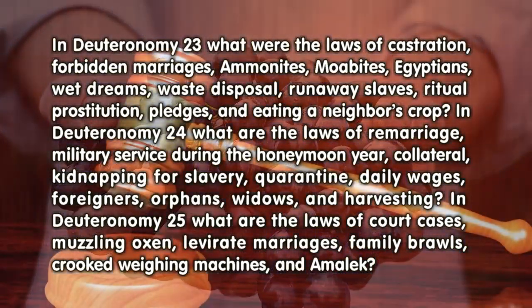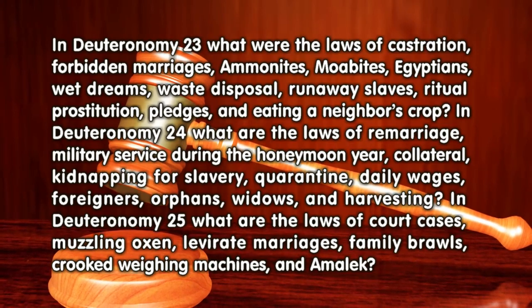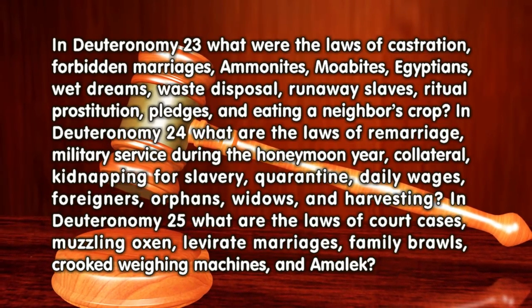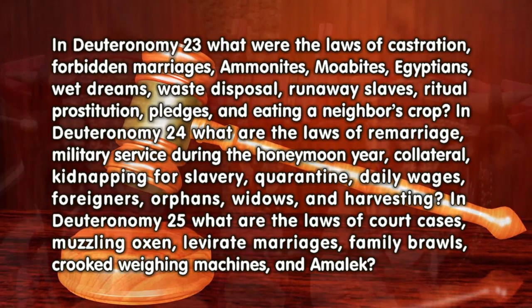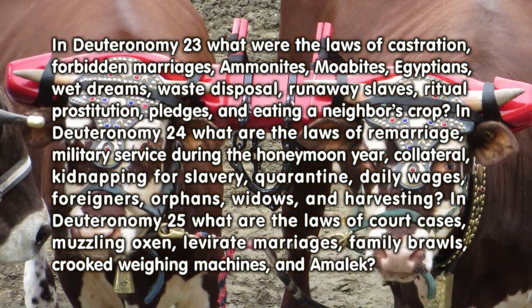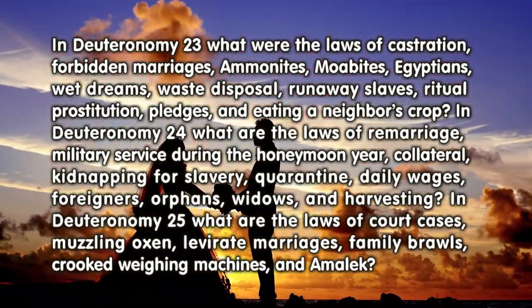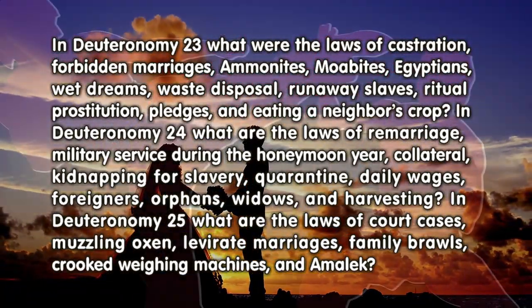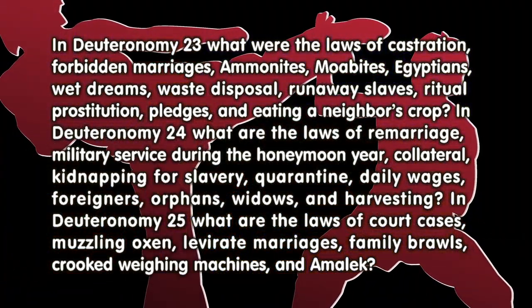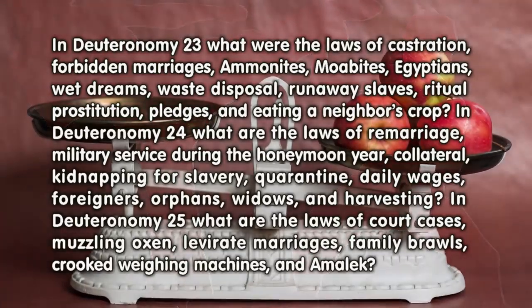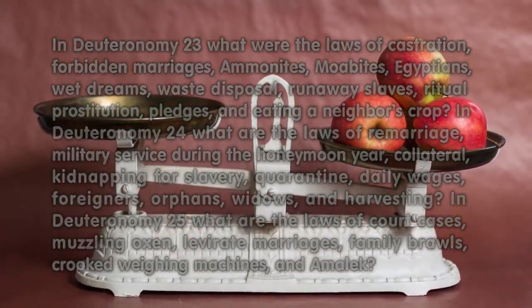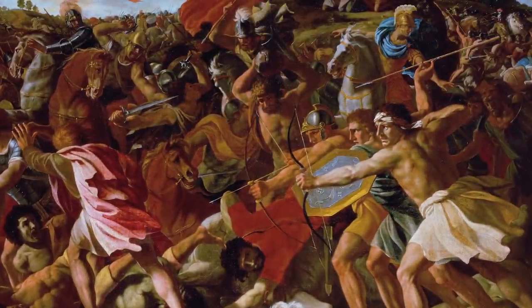In Deuteronomy 25, what are the laws of court cases, muzzling oxen, levirate marriages, family brawls, crooked weighing machines, and Amalek?